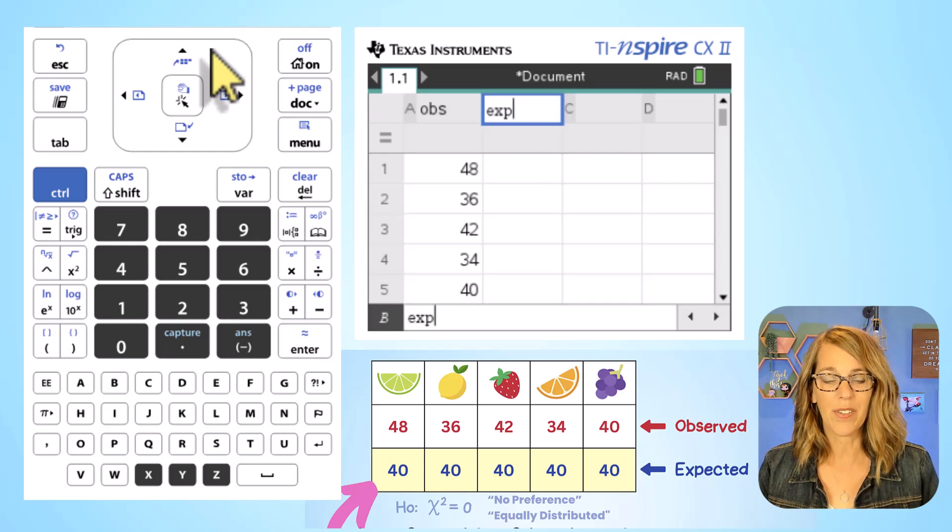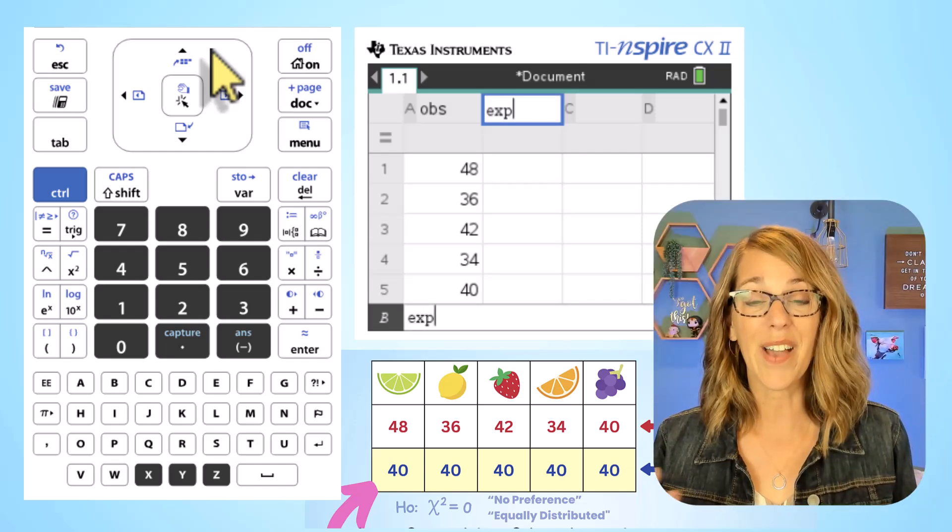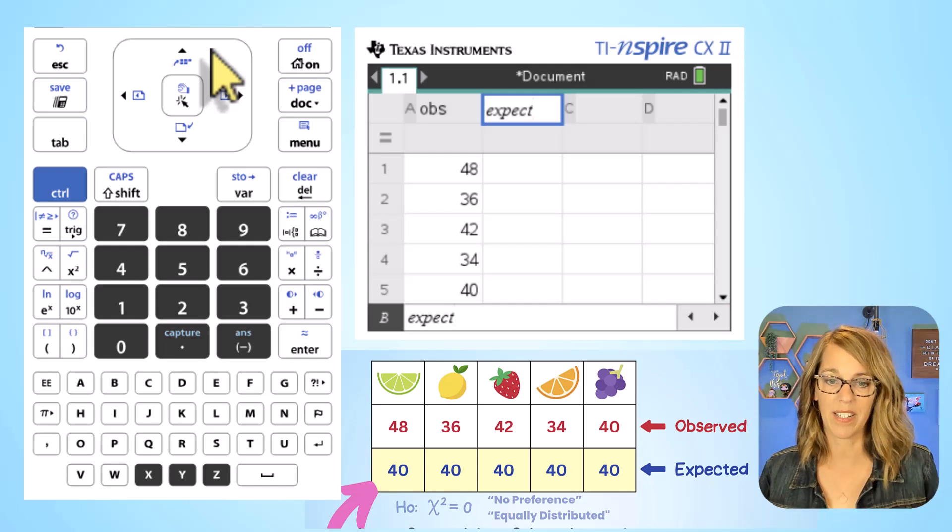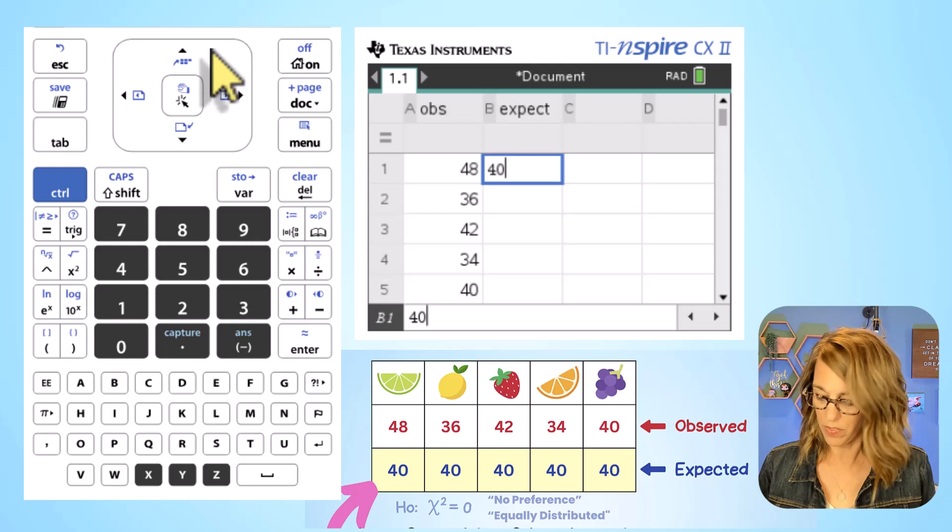These are my expected values, so exp turns out to be a function on the calculator, so I'm going to call this expect. Then arrowing down, there we've got 40 for each of these.